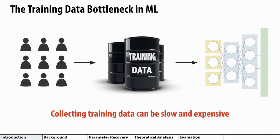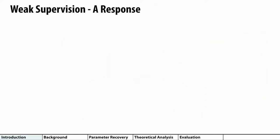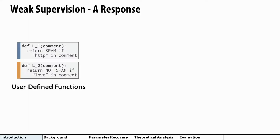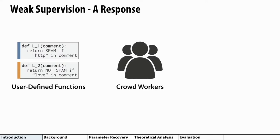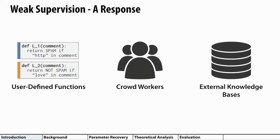Modern machine learning models often require lots of labeled training data to be successful, but collecting all this training data can often be slow and expensive. As a result, practitioners have been turning to weaker forms of supervision, such as user-defined functions, crowd workers, and external knowledge bases, to address the training data bottleneck instead of relying on expensive, high-quality gold labels.